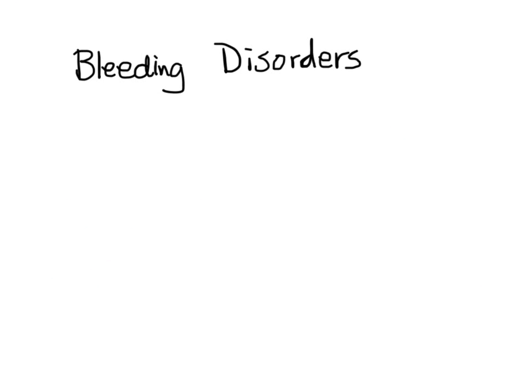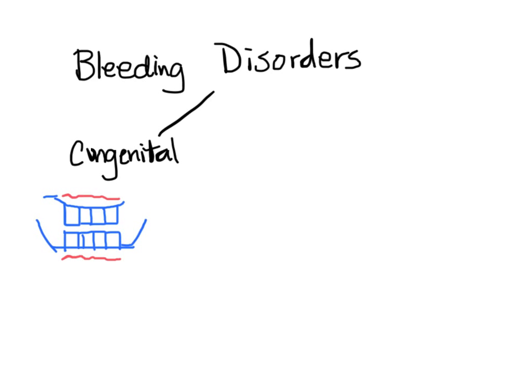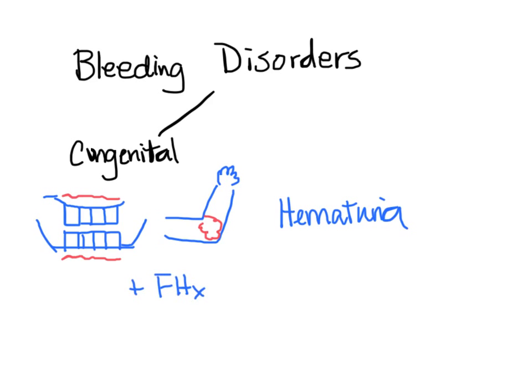The last cause is bleeding disorders that lead to GI bleeding, which can be congenital or acquired. For congenital bleeding disorders, patients tend to have bleeding in other places as well — from their gums, internally into their joints, or hematuria when they urinate. They might also have a family history of bleeding disorder. For acquired bleeding disorders, it is often due to drugs, and the patient can present with similar bleeding from their gums, into the joint, or hematuria. The difference is that you should be able to identify an offending drug.